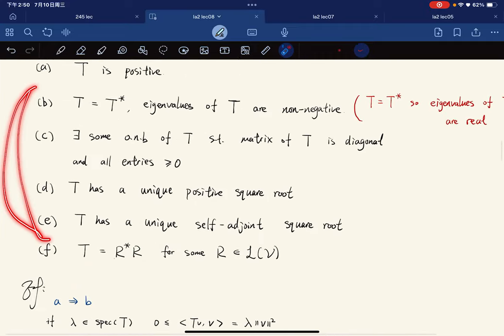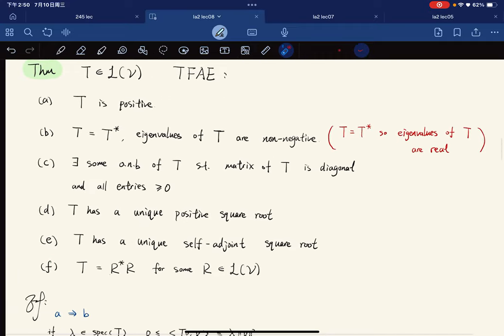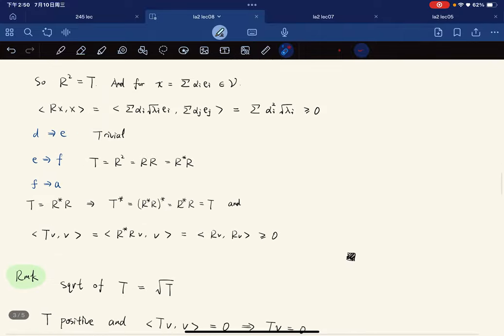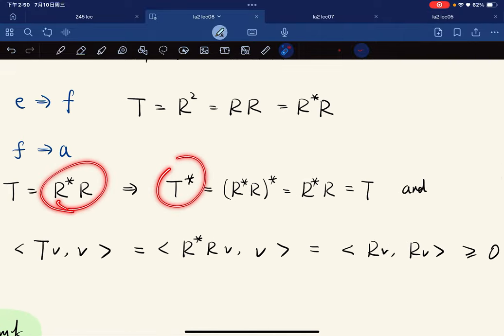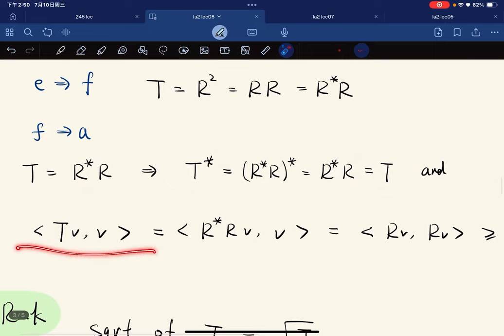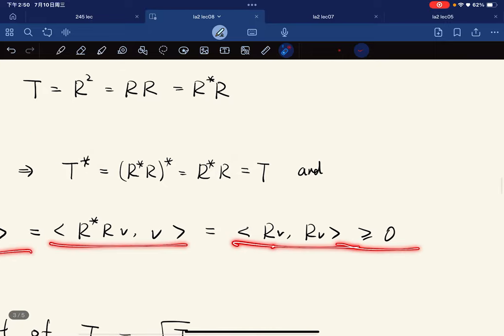To go all the way back, to establish the equivalence of everything, if T equals R*R, then T* equals T, and <Tv,v> equals <Rv,Rv> which is greater than or equal to zero, so we're done.